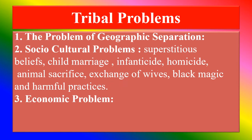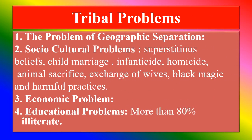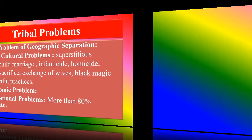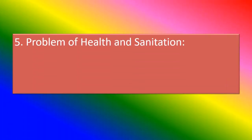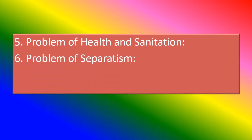Third: economic problems — the majority of tribal people are poor. Fourth: educational problem — more than 80% of tribal people in India are illiterate. Fifth: problem of health and sanitation — there is no adequate hospital and healthcare infrastructure, which causes child mortality and maternal mortality rates that are very high, due to child marriage and other socio-economic issues.